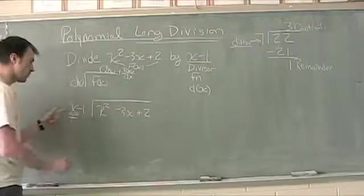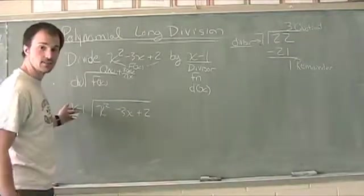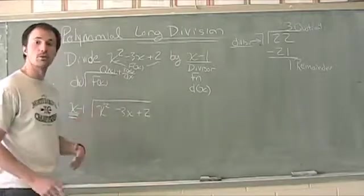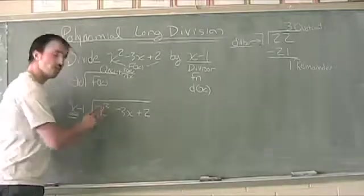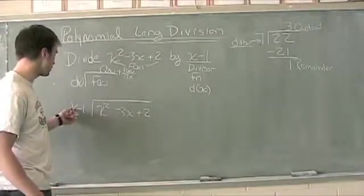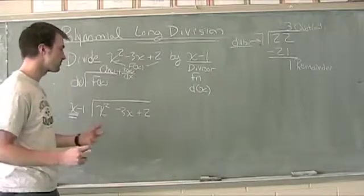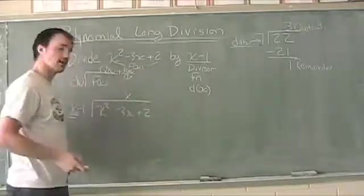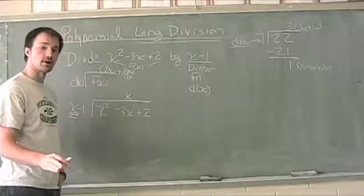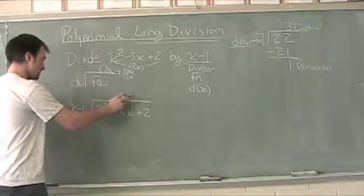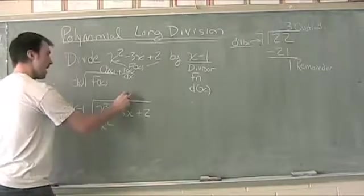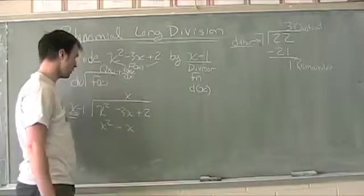We ask ourselves, concerning only our first term, what times x will give me x squared? Notice we're working only with the first terms. What times x gives me x squared? That's right, x. X times x gives me x squared. I'm going to take x times the quantity x minus 1, so x times x gives me x squared and x times negative 1 gives me negative x.